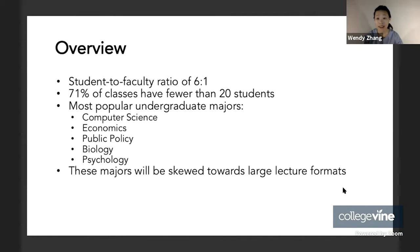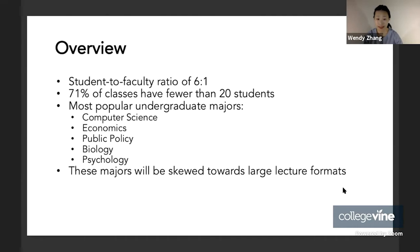Just to give you a high-level overview of some stats, Duke has a six-to-one student-to-faculty ratio. A lot of classes are fairly small, and the most popular undergraduate majors are computer science, economics, public policy, biology, and psychology. These do tend to be some of the more popular majors at undergraduate institutions.